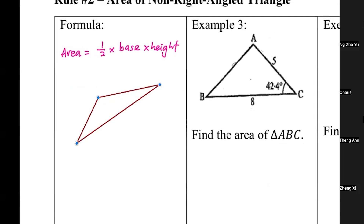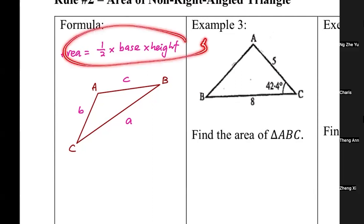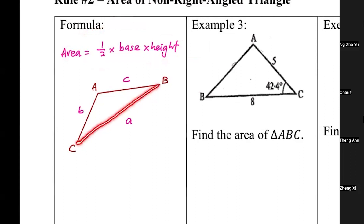Say I give you a non-right triangle with sides a, b, and c, and ask you to find the area. You cannot apply the standard formula because you don't know the height of this triangle. If you consider one side as the base, where is your height? You don't have one given to you. So when you have an area of a non-right triangle, you need a different formula.